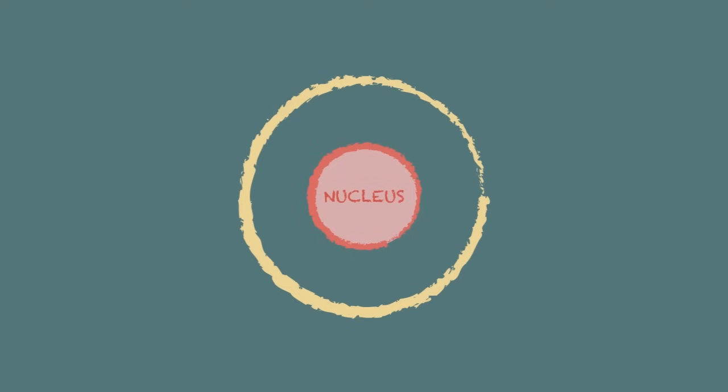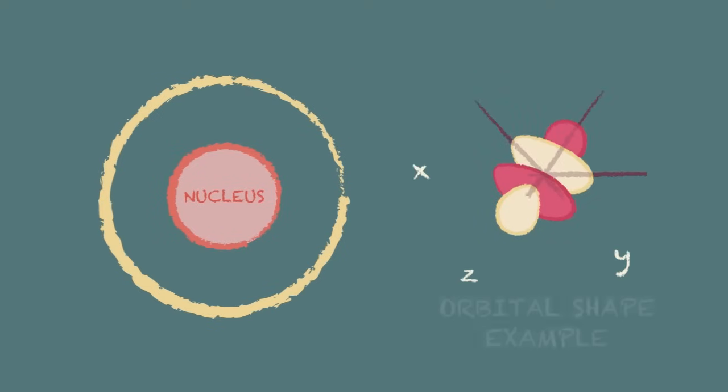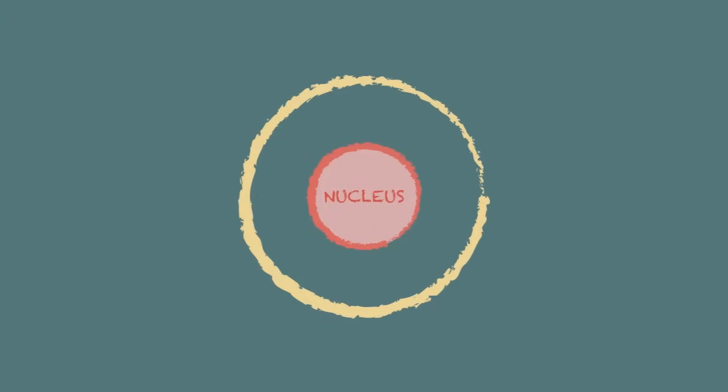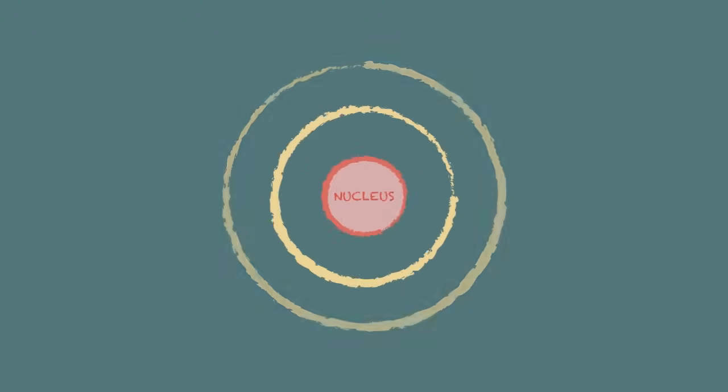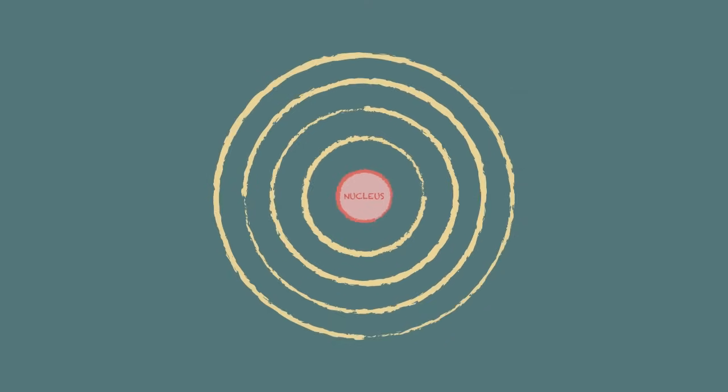Electrons are arranged in energy levels or shells around the nucleus of an atom. The actual orbit shapes are a bit too complicated to cover in such a short lesson but on average the orbital radius increases as the energy levels increase.